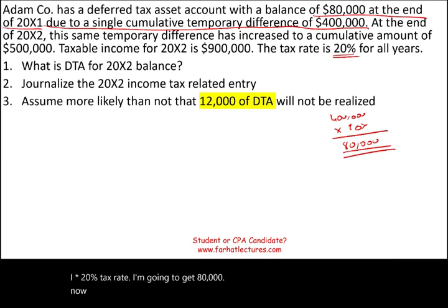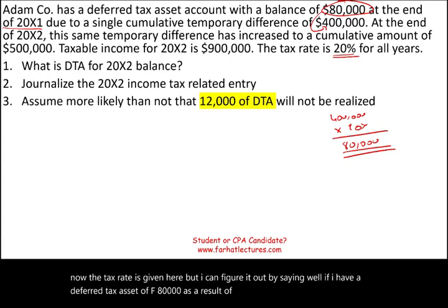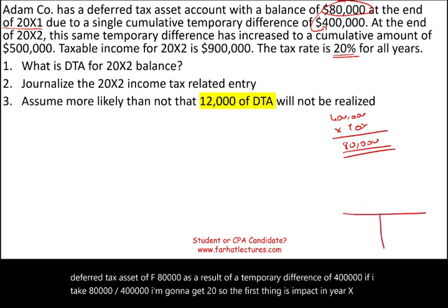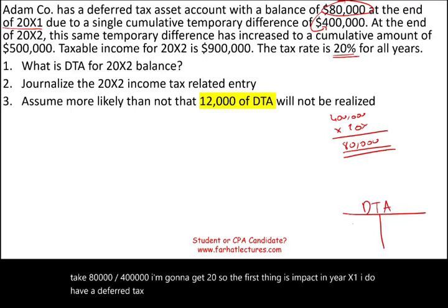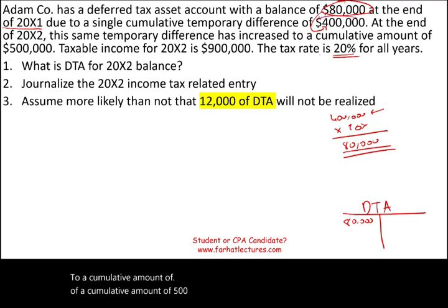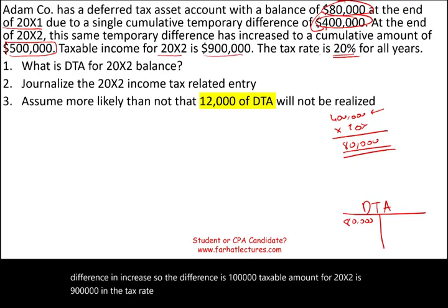The tax rate is given, but we can also figure it out: $80,000 divided by $400,000 equals 20%. So in year X1, we have a deferred tax asset of $80,000. At the end of X2, the same temporary difference increased to a cumulative amount of $500,000 — an increase of $100,000. Taxable income for 20x2 is $900,000, and the tax rate is 20% for all years.